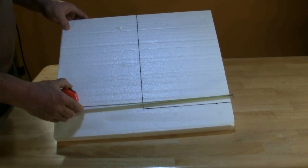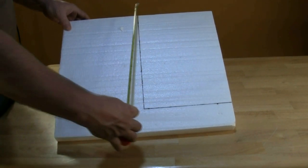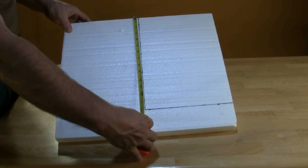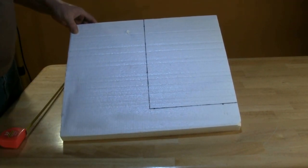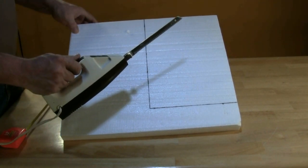Mark the styrofoam to correspond with the measurements. Cut the styrofoam along the marks. We've found that an electric knife works best for this task, but use the cutting device of your choice.